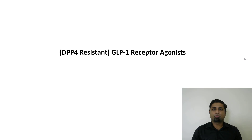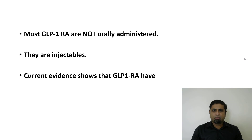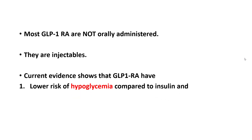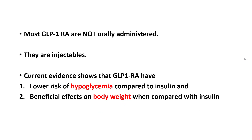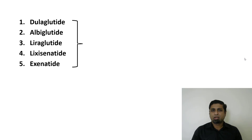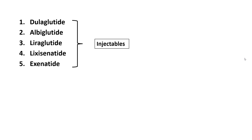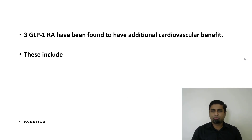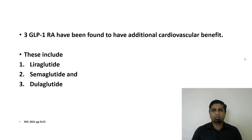DPP-4-resistant GLP-1 receptor agonists are generally not orally administered — they are injectables. Current evidence shows that GLP-1 receptor agonists have a lower risk of hypoglycemia compared with insulin and have a beneficial effect on body weight, causing weight loss. Examples include dulaglutide, albiglutide, liraglutide, lixisenatide, and exenatide. One orally administered GLP-1 receptor agonist exists: semaglutide. Three GLP-1 receptor agonists — liraglutide, semaglutide, and dulaglutide — have been found to possess additional independent cardiovascular benefit.